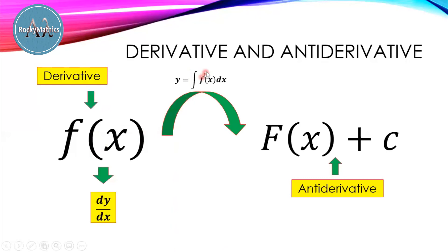We read the integral of f of x dx, and the result is big F of x plus c — this is the antiderivative. The constant c here represents any constant. This means that whatever constant we add to this function, the derivative of this set of functions will still produce f of x. For example, x squared plus 1, the derivative is 2x; x squared plus 4, the derivative is 2x. That's why we have this general formula of antiderivative — there are many antiderivatives.